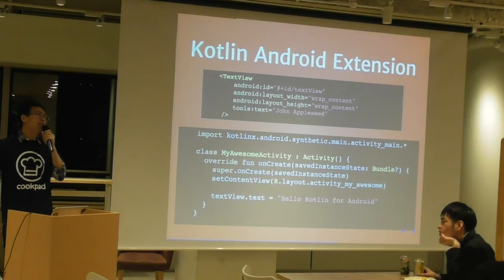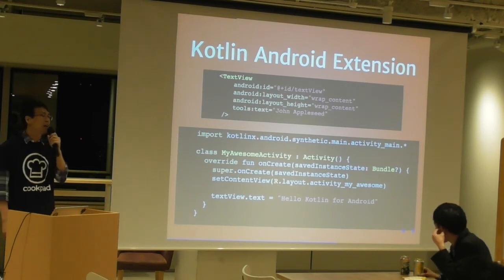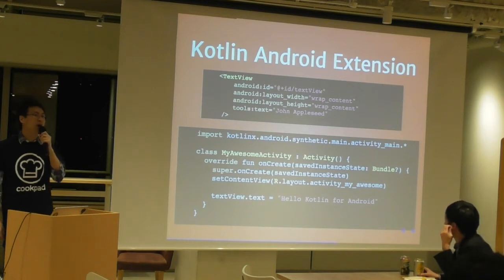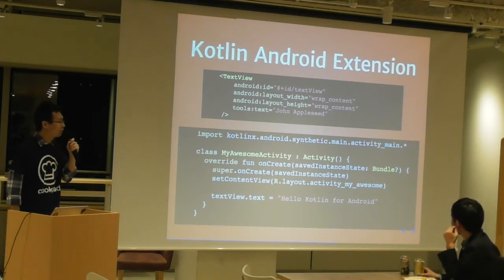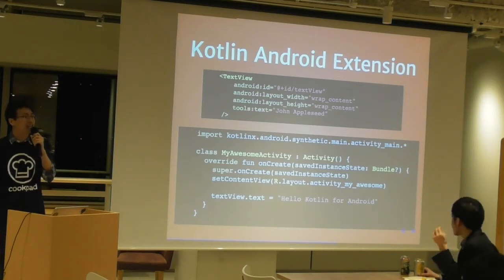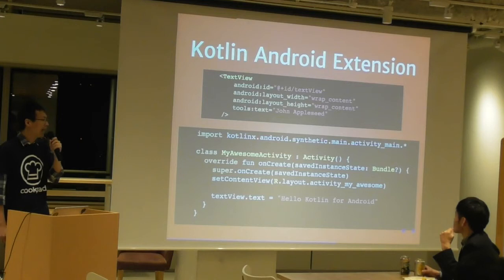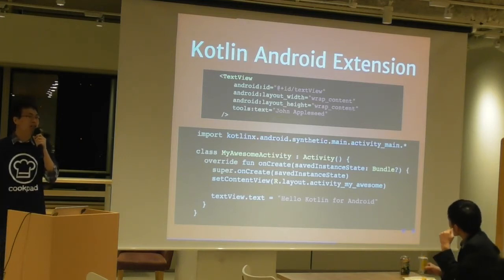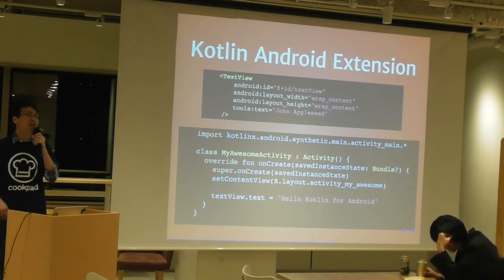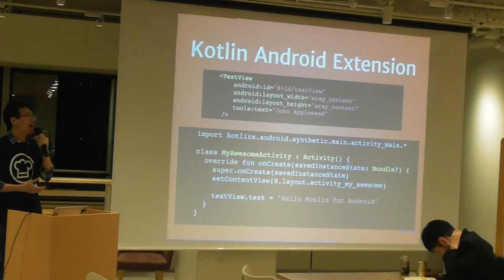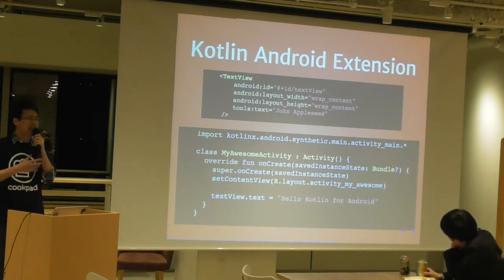JetBrains also supplies us with the Kotlin Android Extension. In regular Android development, you probably have an XML file describing your UI. You can just use the view name — for example, 'textView' — right away in your activity code without calling 'findViewById' at all. If you look at 'MyAwesomeActivity,' you can see I accessed the TextView using 'textView.text' right away. This is all possible by using the Kotlin plugin. What they do behind the scenes is call 'findViewById' for you and expose it as an extension property over your class, so you can use it without calling 'findViewById' yourself. All you have to do is import one line.